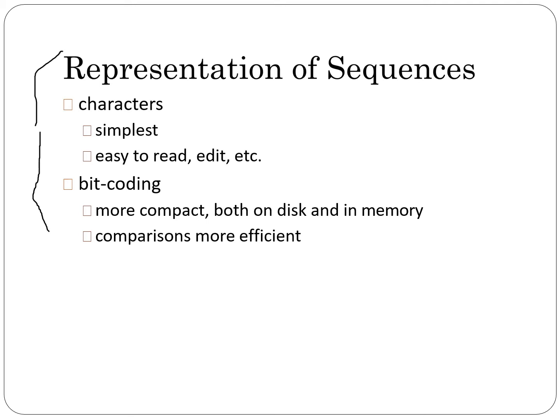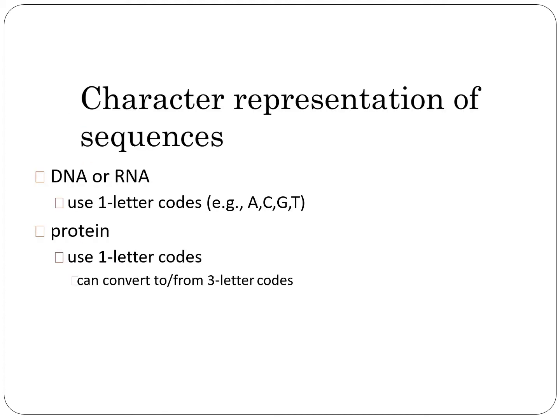Regarding the representation of sequences: characters are the simplest form, denoted by single-letter alphabets that are easy to read and edit. They also support bit coding, making them more compact both on disk and in memory, and allow comparisons and alignments to be performed efficiently.